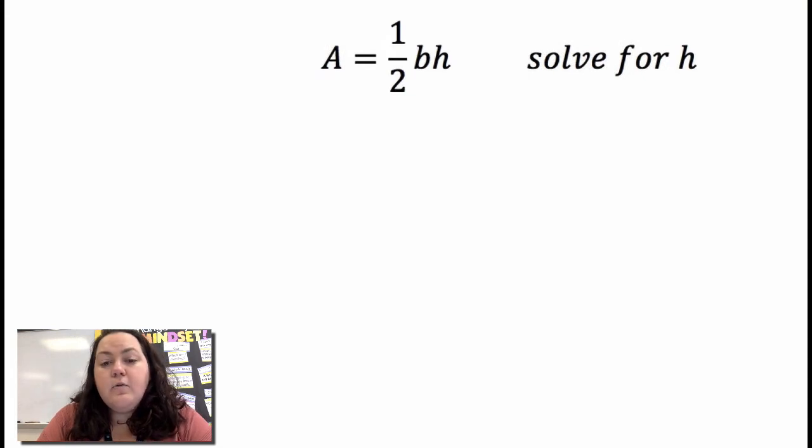This next one I have a equals one half bh. They want us to solve for h, so I want to get h by itself. I want to get rid of that fraction, so I'm going to multiply by the reciprocal which would be two over one on both sides or just two. So that cancels, I get 2a equals bh.